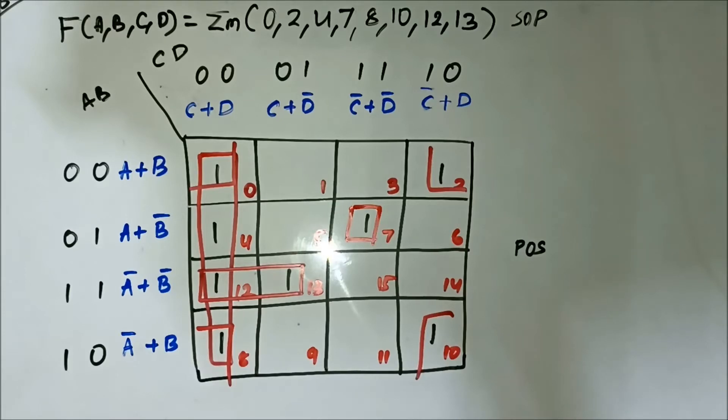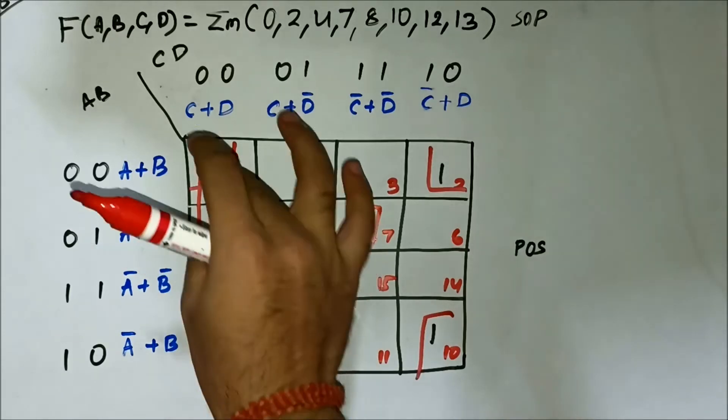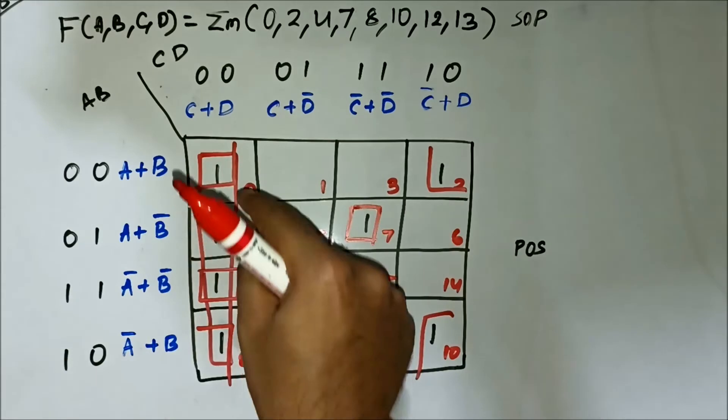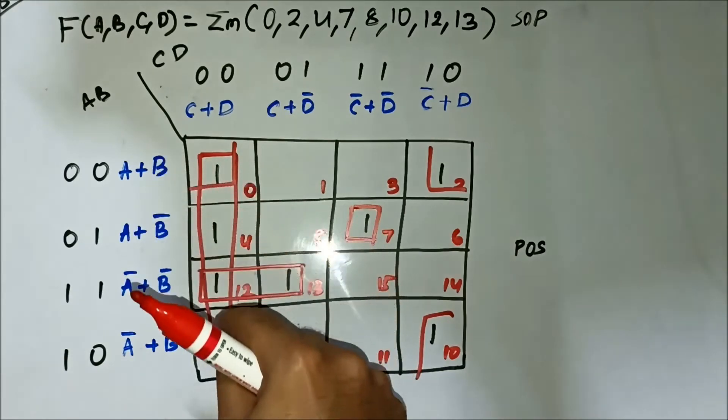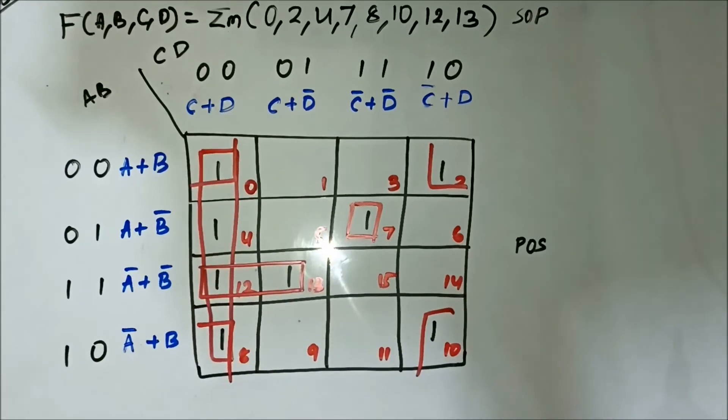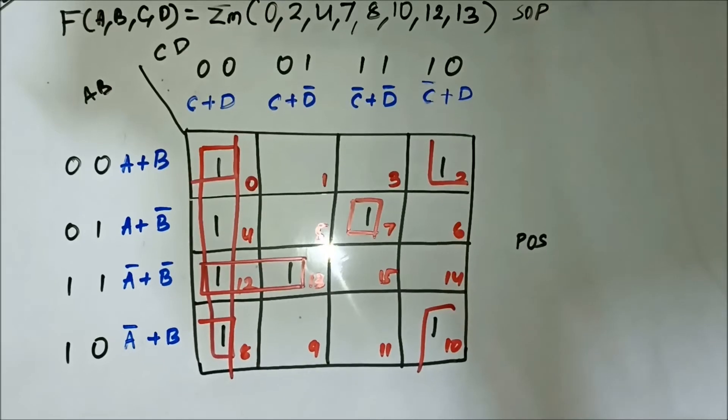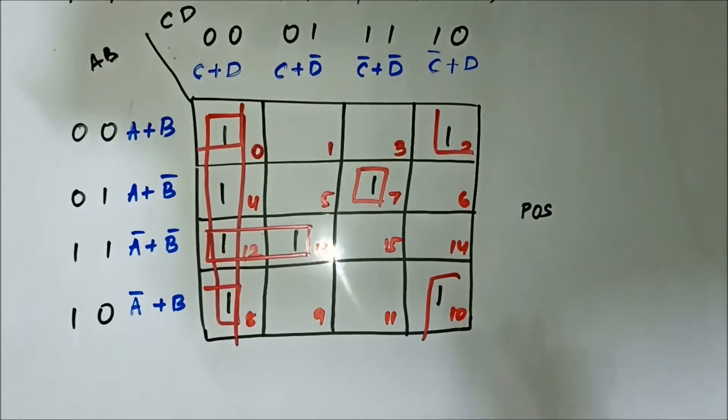Now, identifying the common variables. First for this quad involving cell 0, 4, 12, 8. In the horizontal side, nothing common. In the vertical side, C complement D.